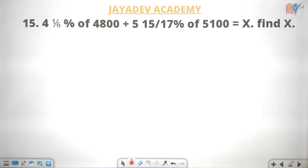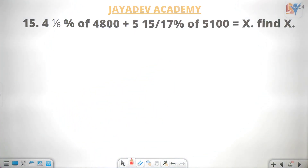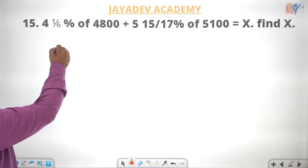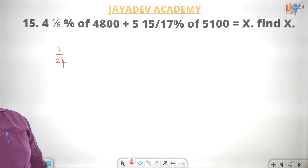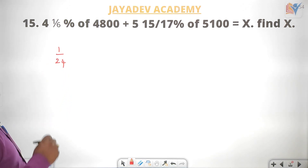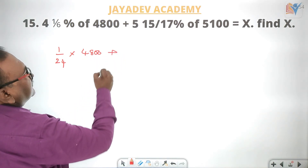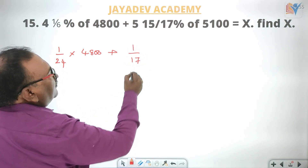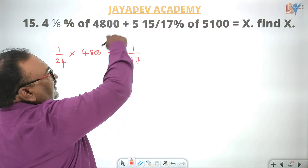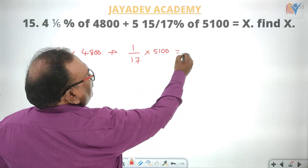15 by 17% of 15 divided by 100 is equal to x. Using fraction conversion, 4 and 1/6% is equal to fraction 1 by 24. Into 4008, plus 1 by 15 by 17. So i is equal to 1 by 17. Convert the percentage fraction: 1 by 17 into 5, giving x.